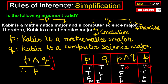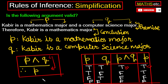Jab bhi kisi argument ki argument form yeh banti hai jis mein premise p and q hai or conclusion p hai, us case mein woh argument hamesha valid hoga — irrespective of the fact ki p variable kaunsa proposition hai, q variable kaunsa proposition hai. Aur yeh hamare paas ek naya rule of inference aya propositional logic ka, aur is rule ko hum bolte hain simplification. Simplification isliye bolte hain ki premise p and q hai, or jo conclusion p hai, isko hum aise le ke chal sakte hain ki p and q conjunction ko simplify karke hamare paas conclusion p aa raha hai.